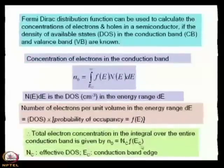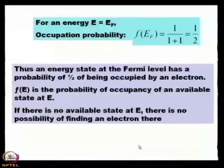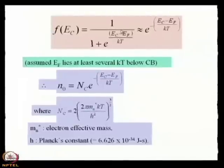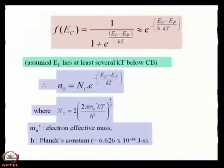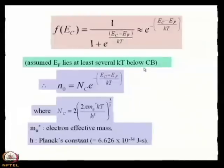We want to calculate f(E_c) — that is, the value of the distribution at the conduction band edge. Just replace E by E_c in the original expression. With some approximation, assuming E_f lies at least several kT below the conduction band, we can write f(E_c) ≈ e^(-(E_c - E_f)/kT). What is kT? kT is the thermal energy. At room temperature (300 K), the value of kT is approximately 26 meV.